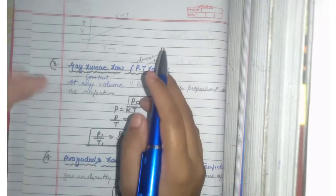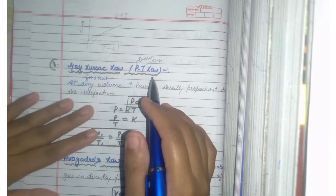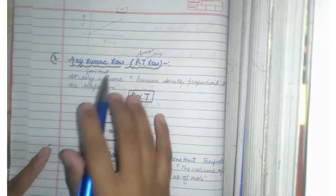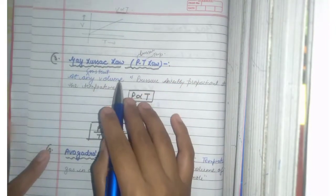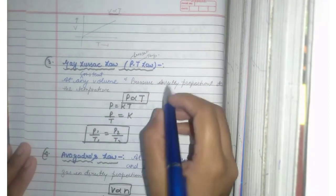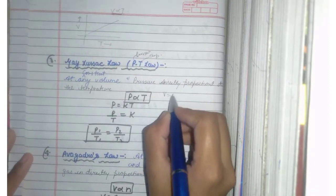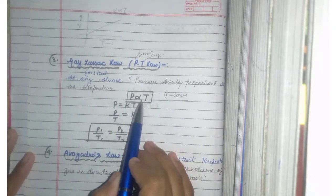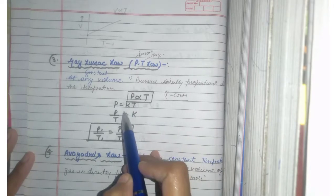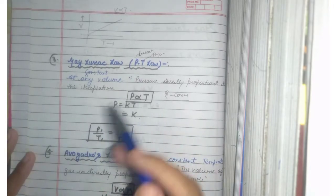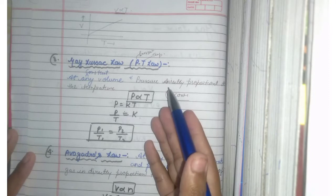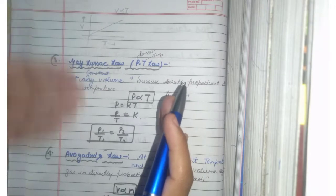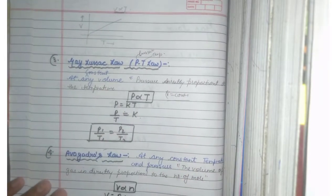Now you see the third law, the Gay-Lussac's Law. We say it as pressure temperature law. At any constant volume, pressure is directly proportional to the temperature. Here the volume is constant. P directly proportional to T, so P over T is equal to K. And if you have two pressure and two temperature, then P1 over T1 is equal to P2 over T2.